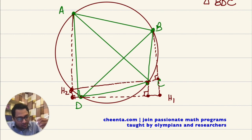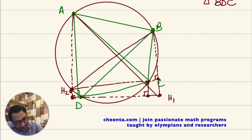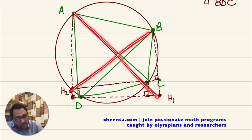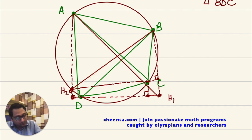Our goal is to show that AH1 like this and BH2 like this, they bisect each other. AH1 and BH2, they bisect each other. That is the goal. Goal: show that AH1 and BH2 bisect each other.